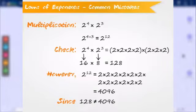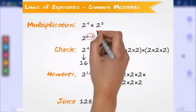For example, we can now solve 2 to the power of 4 multiplied by 2 to the power of 3.